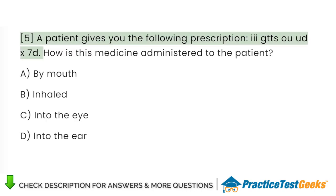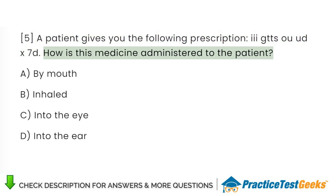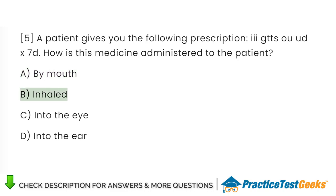A patient gives you the following prescription: 3 GTTS OU UD X7D. How is this medicine administered to the patient? A. By mouth. B. Inhaled. C. Into the eye. D. Into the ear.